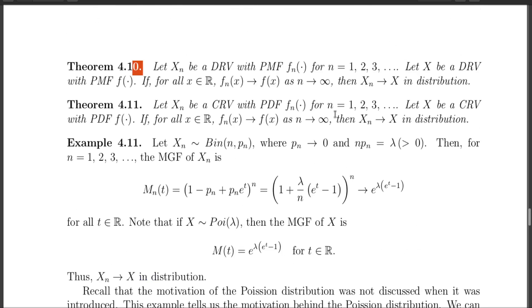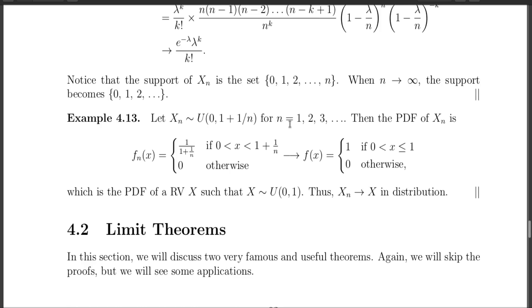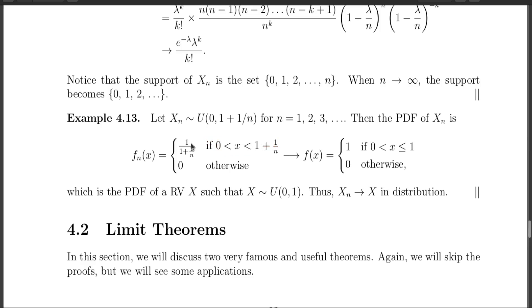The next example illustrates Theorem 4.11. We take Xn as a Uniform(0, 1 + 1/n) distribution. As n → ∞, Xn should converge to a Uniform(0,1) distribution, and we can show this using the density function. The density of Xn is 1/(1 + 1/n) on (0, 1 + 1/n). If you take any x in (0, 1), it lies in the support for all n, and the limit of the density is 1. If x < 0, fn(x) = 0 for all n, so the limit is 0. If x > 1, we can find N such that 1 + 1/n < x for all n > N, so fn(x) = 0 and the limit is 0. This shows Xn converges to Uniform(0,1) in distribution.